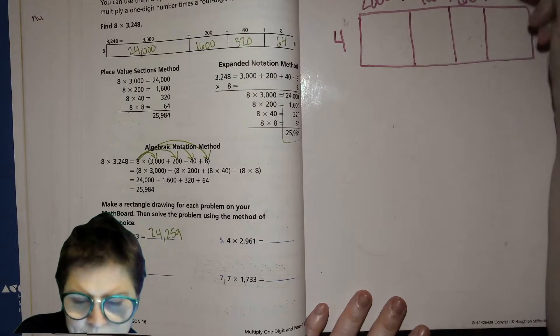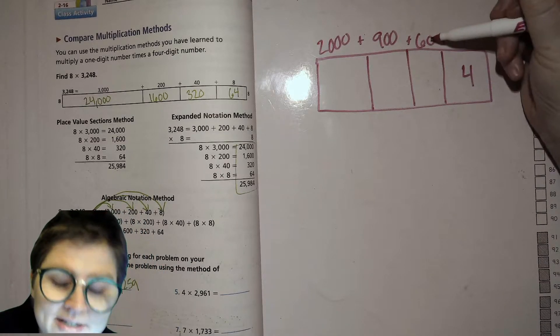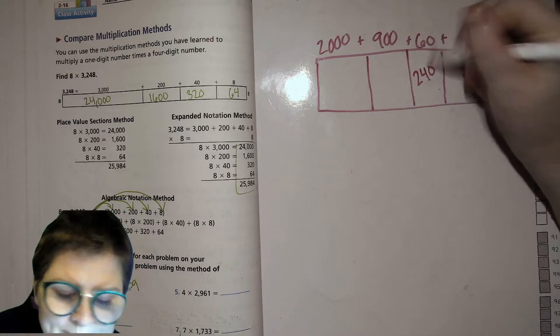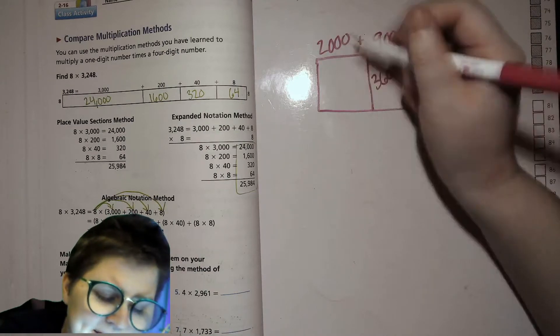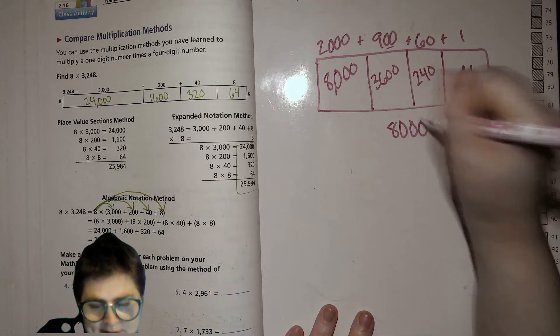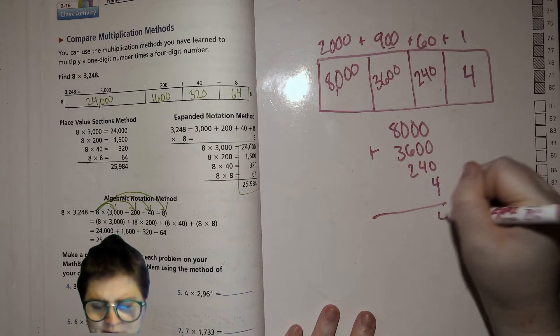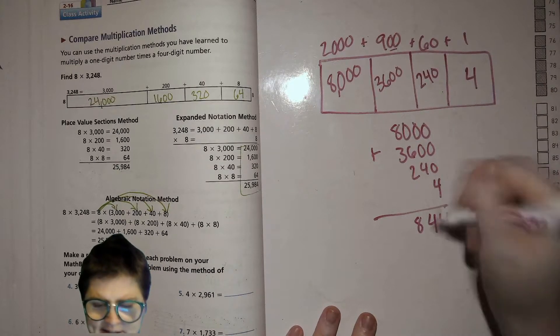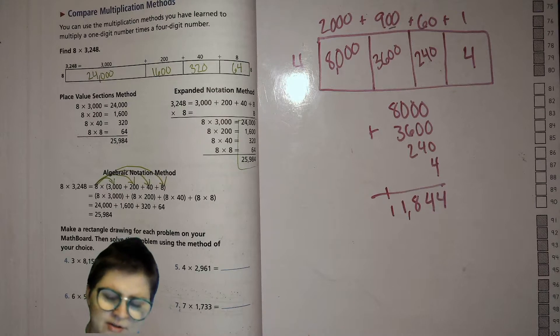Next problem: 4 times 2,961. 4 times 1 is 4. 4 times 6 is 24, so 4 times 60 is 240. 4 times 9 is 36, so 4 times 900 is 3,600. And 4 times 2 is 8, so 4 times 2,000 is 8,000. Adding those up: 8,000 plus 3,600 plus 240 plus 4 gives us 11,844.